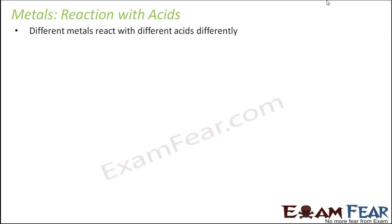Different metals react with different acids differently. So even if you take the same acid and make it react with different metals, the reactions will be different. If you take different acids with the same metal, the reactions will also be different. So basically it depends on which particular metal is reacting with which particular acid.